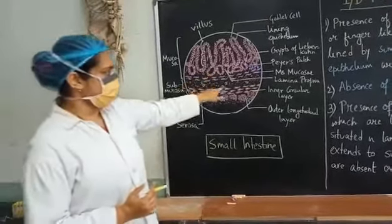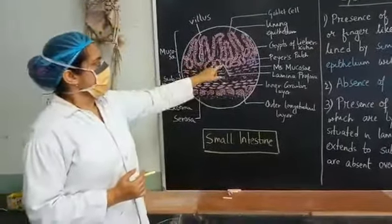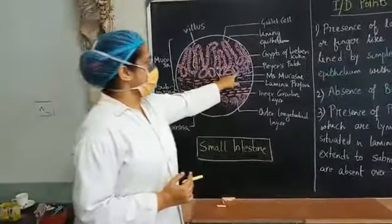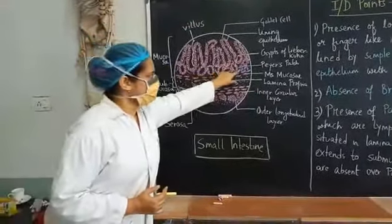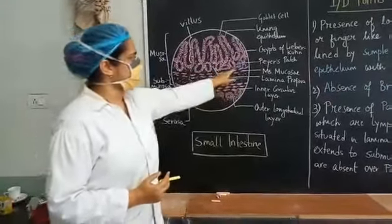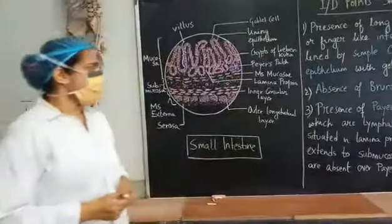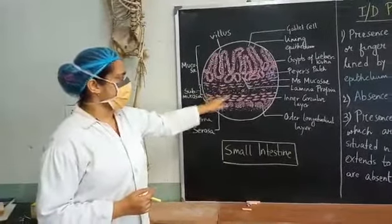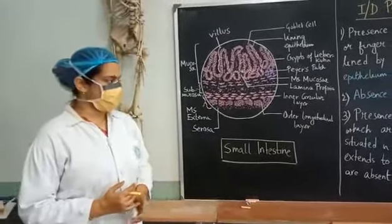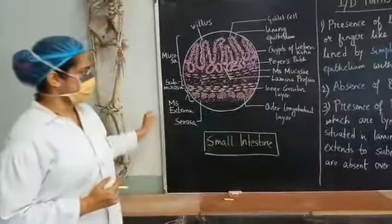Instead in the lamina propria, especially in the case of ileum, you will find aggregation of lymphatic follicles or lymphatic nodules. These purple colored dots are known as Peyer's patches. In some cases it may extend into the submucosa also. And the villi are absent over these Peyer's patches.